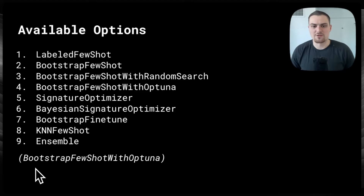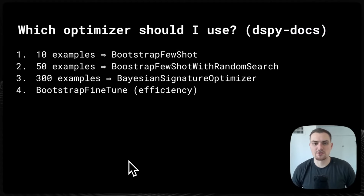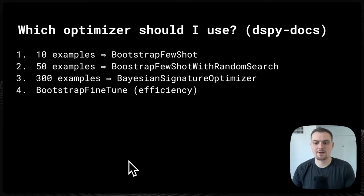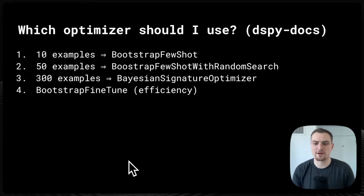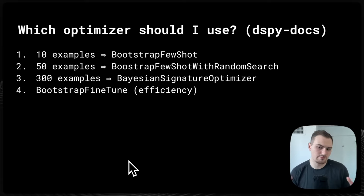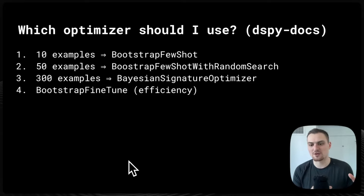From the DSPy documentation, there's a recommendation on which optimizer to use based on how many examples you have. If you have 10 examples, use Bootstrap FewShot. If you have 50, bring in random search optimization. If you have 300, graduate to the Bayesian signature optimizer. Bootstrap fine-tuning is generally recommended for efficiency — in theory you can compress models for specific tasks.